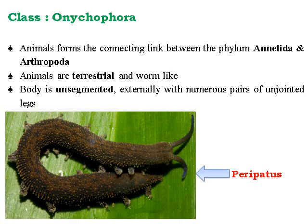We will go through the details of the different seven classes of Arthropoda. Onychophora — these animals form the connecting link between phylum Annelida and Arthropoda. The annelid example is the earthworm. These animals are terrestrial and worm-like in structure. The body is externally unsegmented with numerous pairs of unjointed legs. The example is Peripatus.